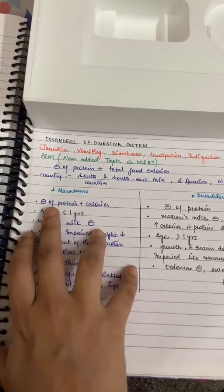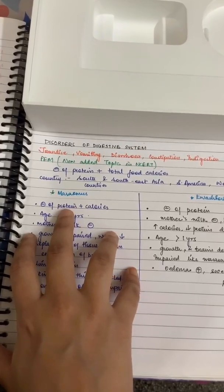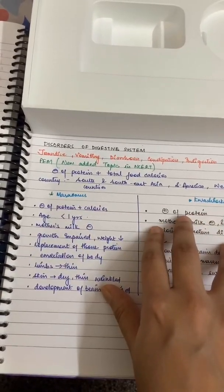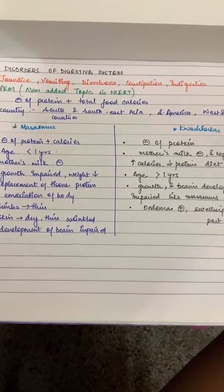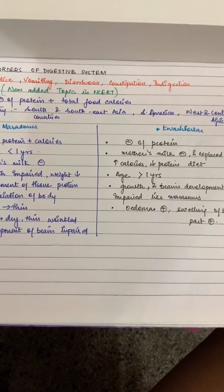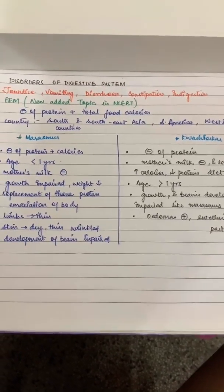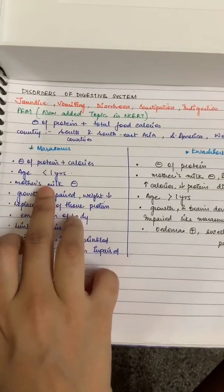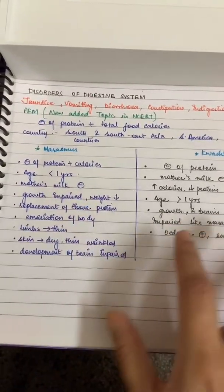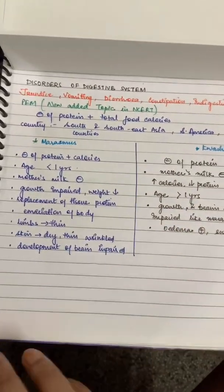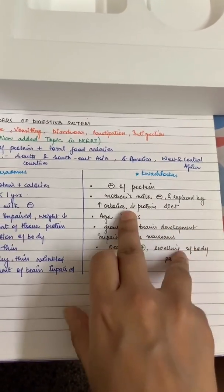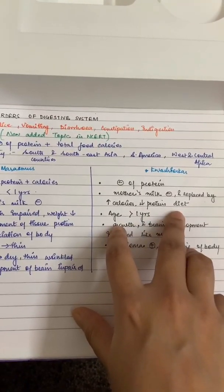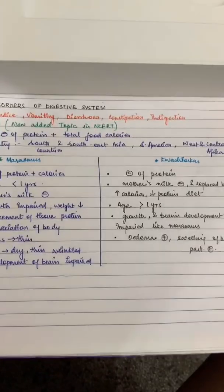You need to remember the comparison between Marasmus and Kwashiorkor. The main difference is that in Marasmus, both protein and calories are deficient, while in Kwashiorkor, only protein is deficient. Marasmus occurs below 1 year of age. In Kwashiorkor, the mother's milk is replaced by a high-calorie but low-protein diet, so the child has calories but no protein and lacks other essential nutrients.